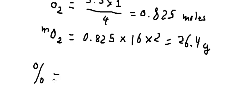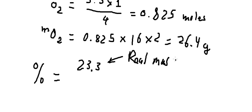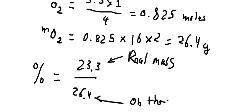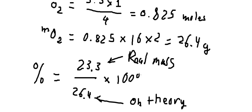The next part asks for the percentage yield. The formula is: actual mass divided by theoretical mass, multiplied by 100%. The real mass is 23.3 grams divided by 26.4 grams (the theoretical mass), multiplied by 100%, giving us 88.26%. This is the final answer. Thank you for watching.